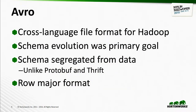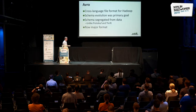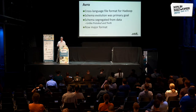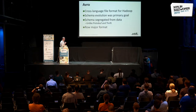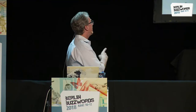Avro was designed by Doug Cutting. It's a cross-language file format for Hadoop. It was the first one to really do schema evolution in a big way, and that was one of its defining characteristics. The schema was segregated from the data, unlike Protobuf or Thrift, because it was originally designed as a file format — not as a messaging or RPC interface, even though that's how it's typically used now. It's a row-major format, meaning each row is written out together.